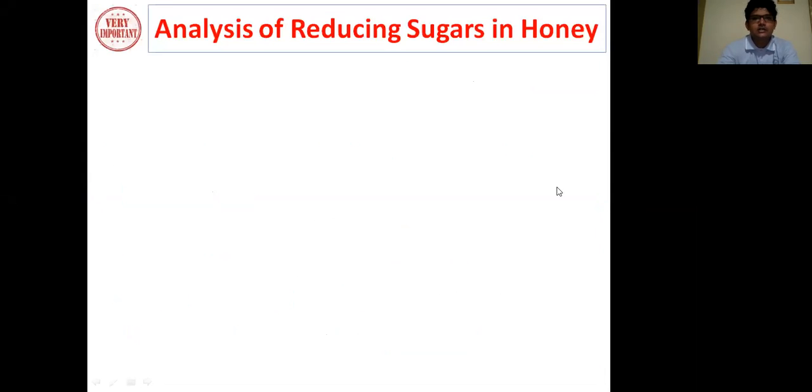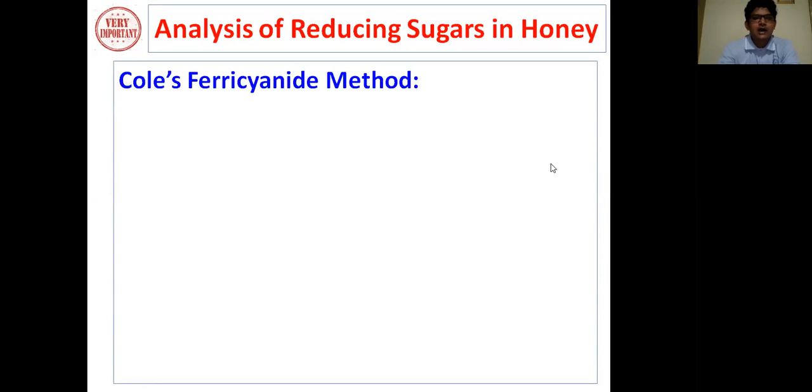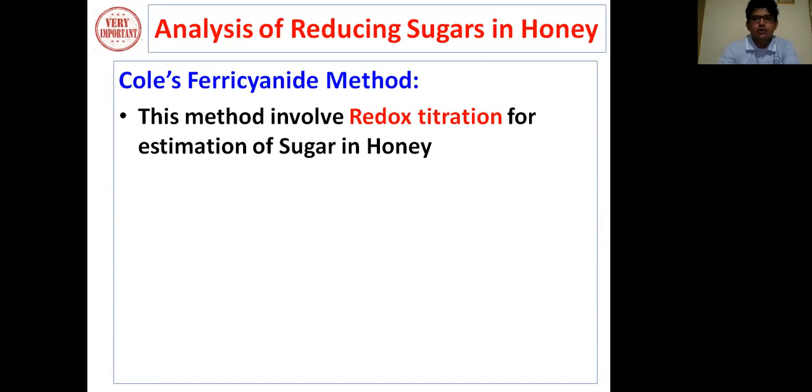So here is the detailed procedure. Analysis of reducing sugar in honey by Cole's ferricyanide method. First, we are going to see how to analyze the reducing sugar present in the honey. This method involves redox titration for estimation of sugar in honey. The analysis is performed in two steps.